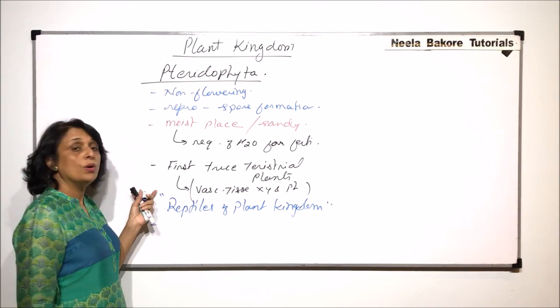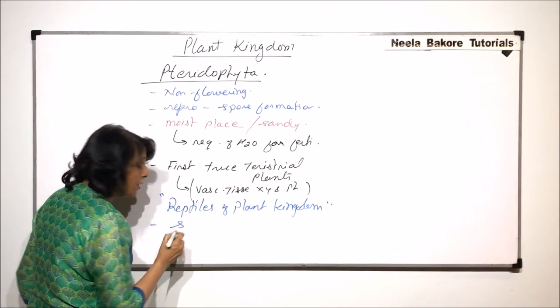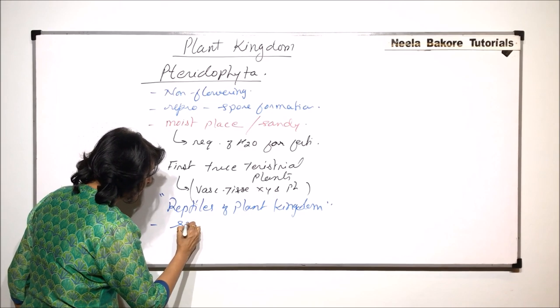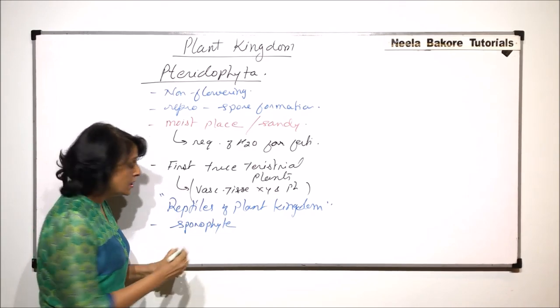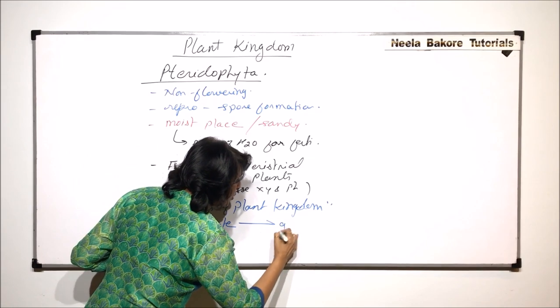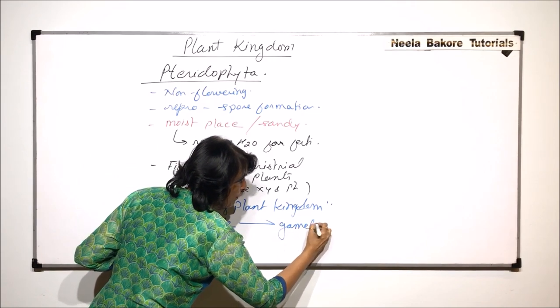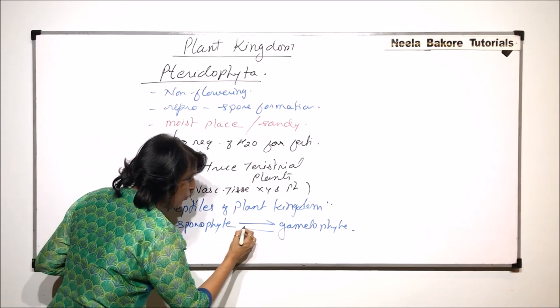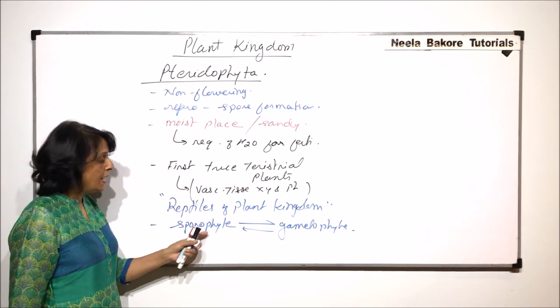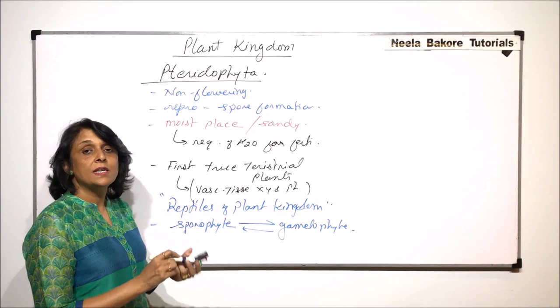They also show, the pteridophytes, alternation of generation. There is a sporophyte stage which gives rise to the gametophyte stage, and the gametophyte again would give rise to the sporophyte. How this happens, that we will see in detail.